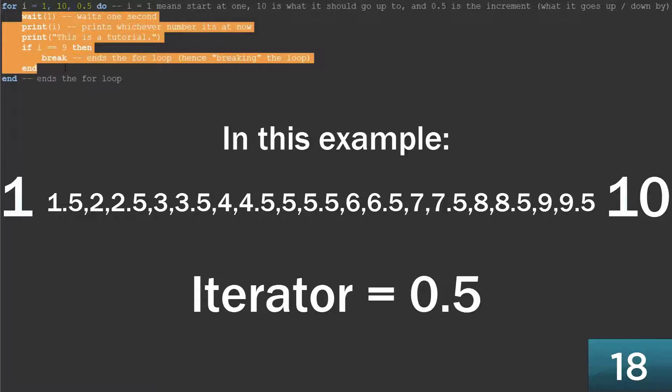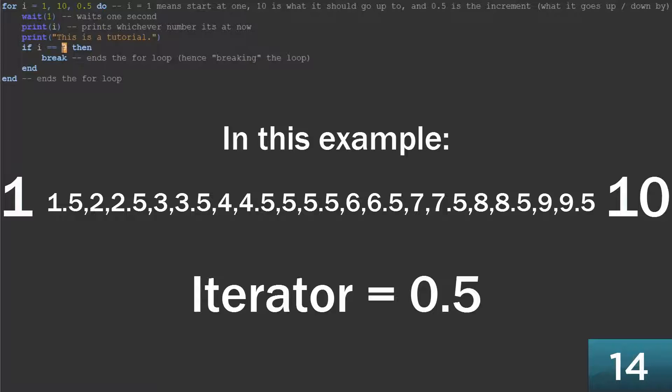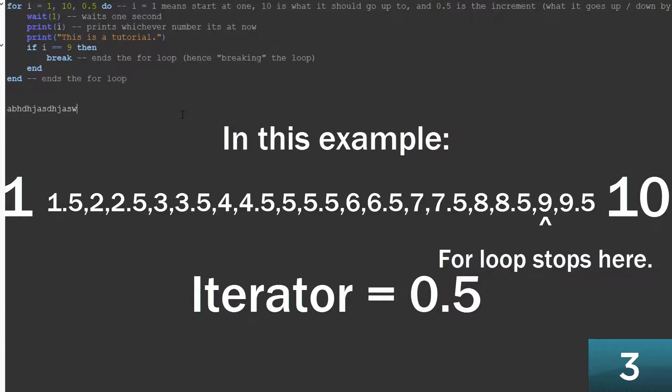So all this code will run every single time, but it won't actually run 20 times because it says if i equals 9 then it will do this, and break. It will break the script and what break does is it stops the for loop running and then it runs whatever's under here.